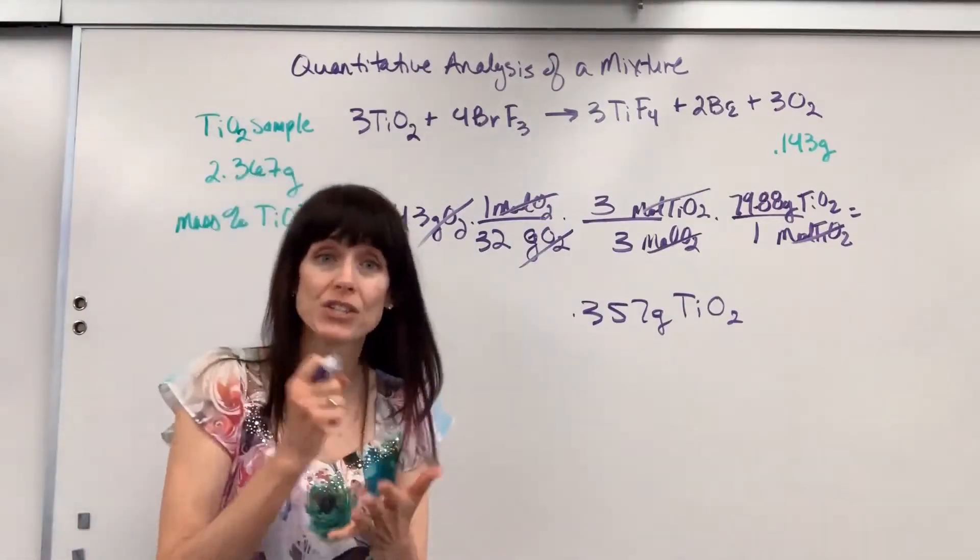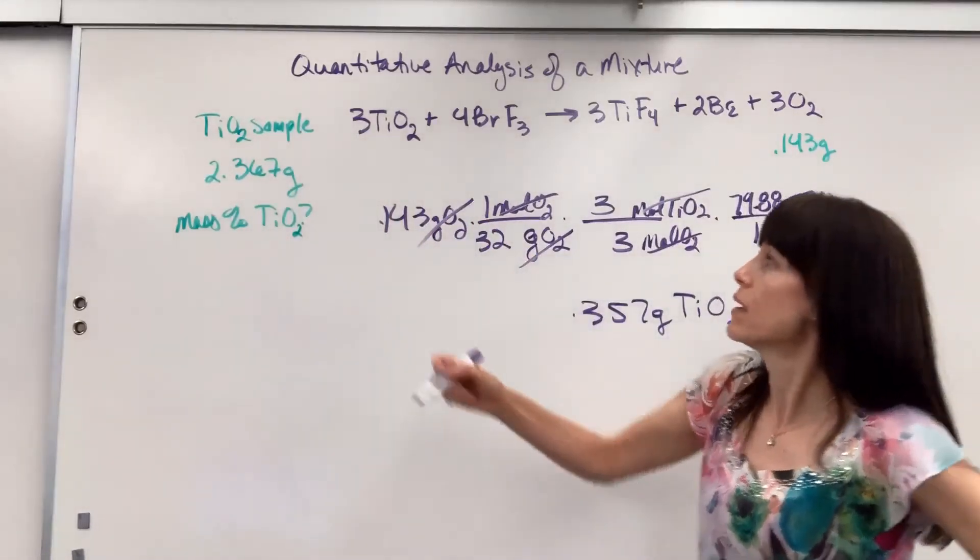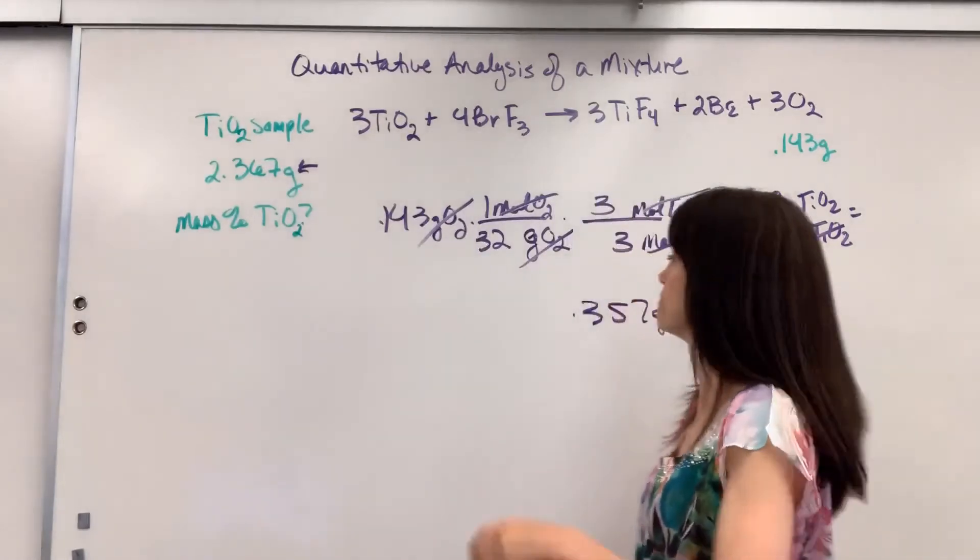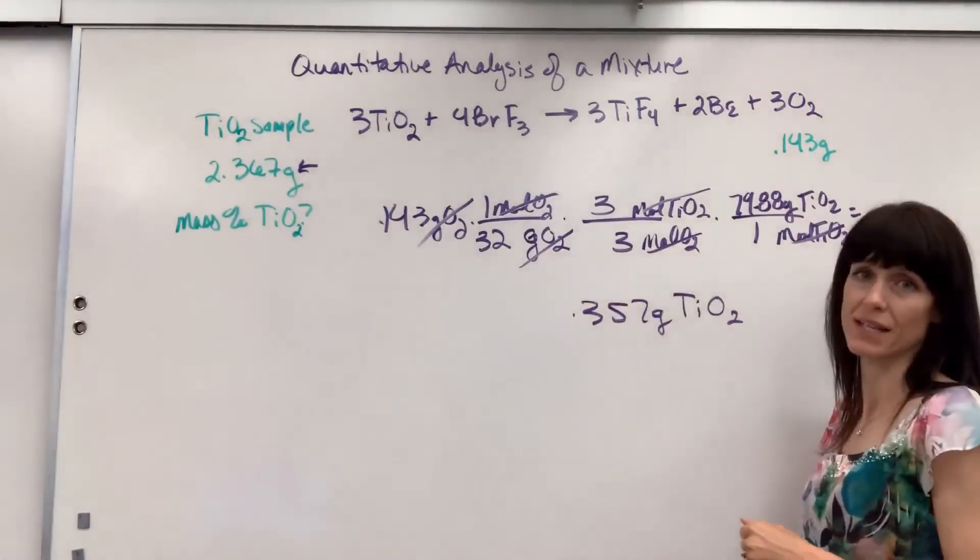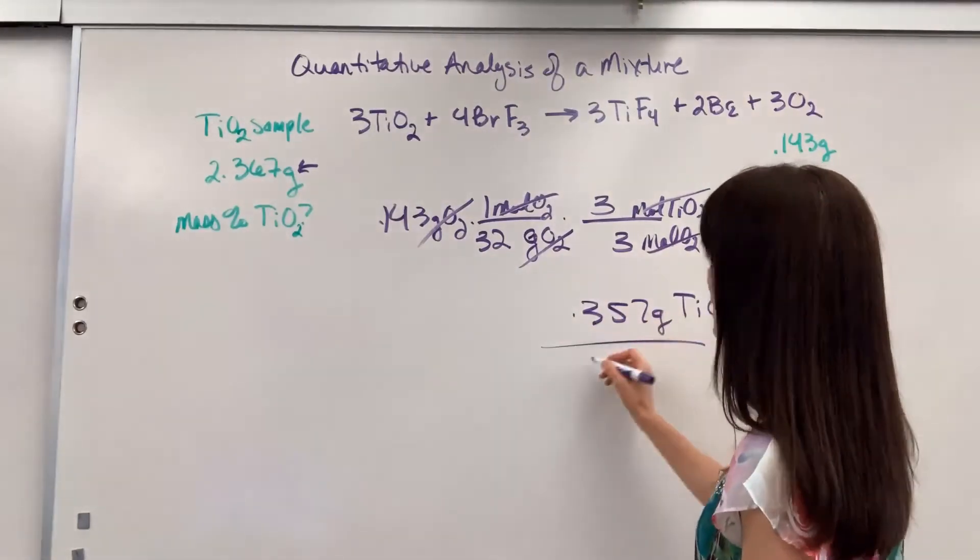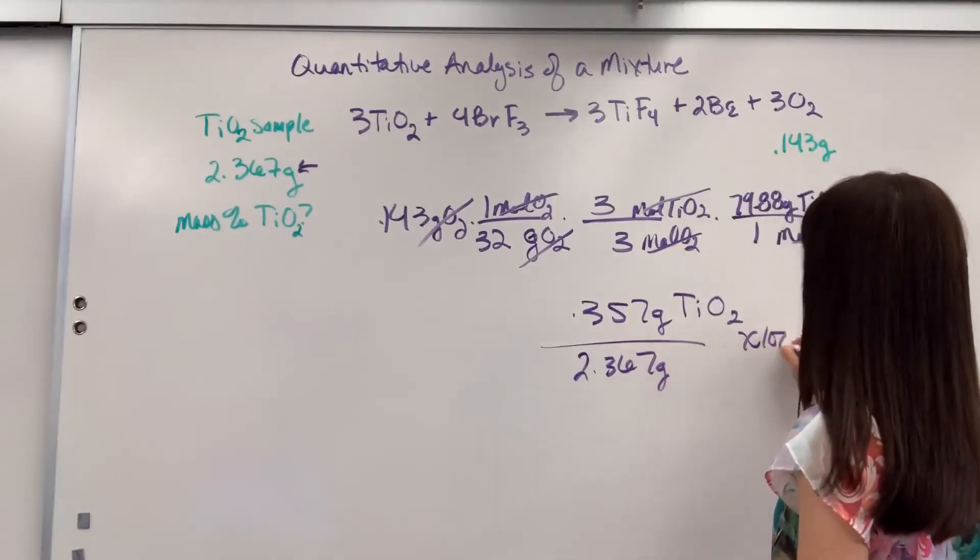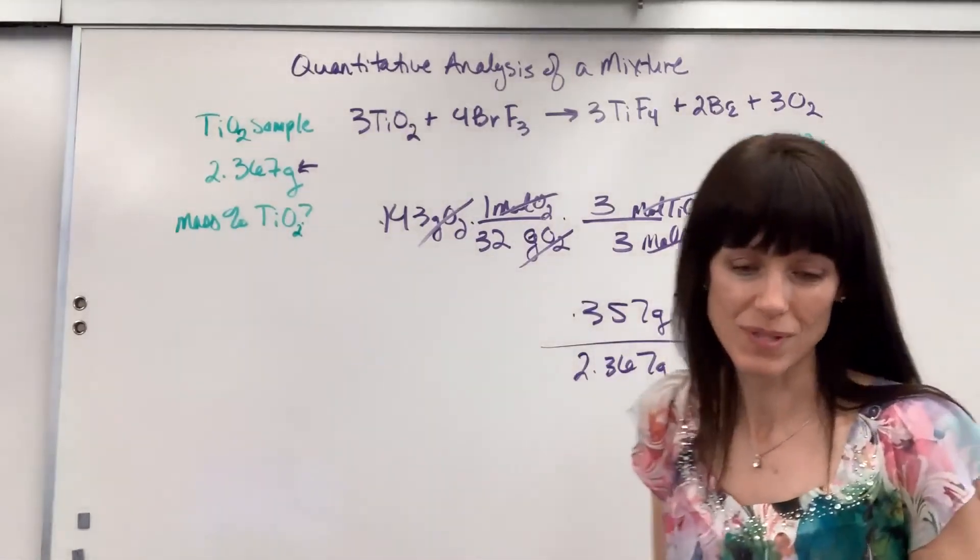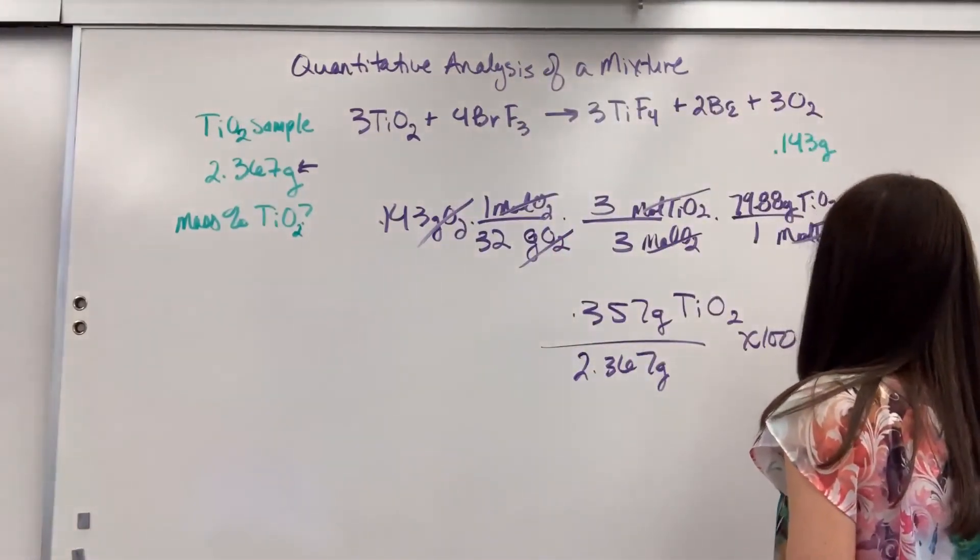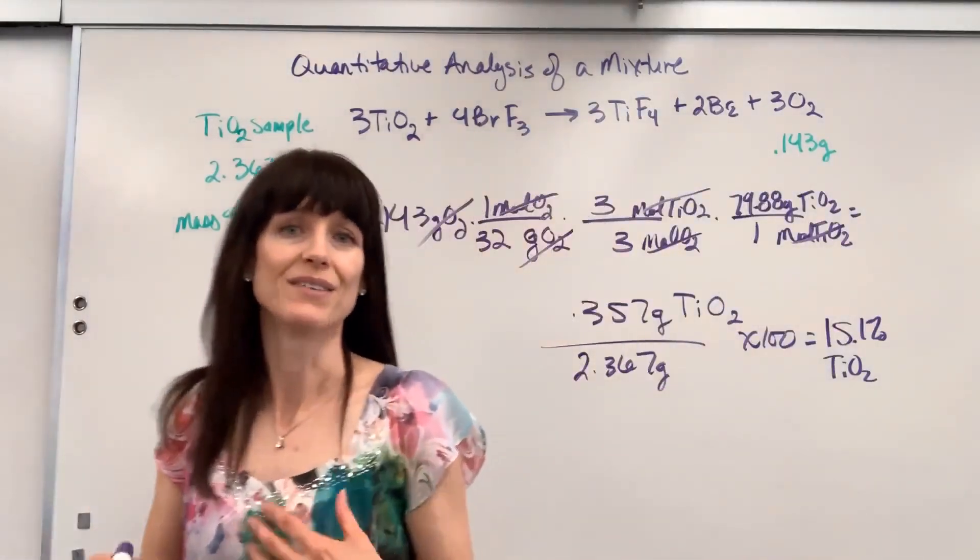Now the question was right here. What's the mass percent of that titanium four oxide? Well, this is the mass of the whole sample, that mixture. This is the mass of just the titanium four oxide. So all we have to do is divide it now 0.357 divided by 2.367 grams. We're going to multiply it by 100 to get a percent. And that comes out to be 15.1 percent of titanium four oxide inside of that sample.